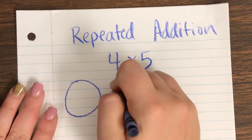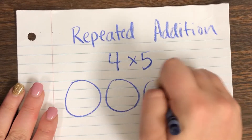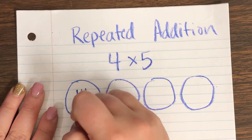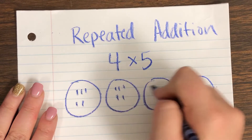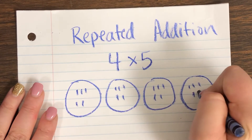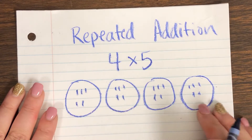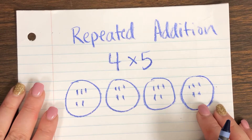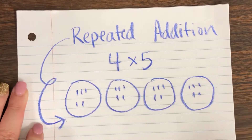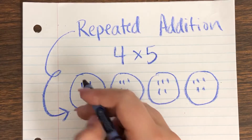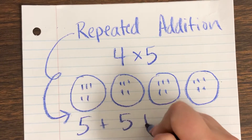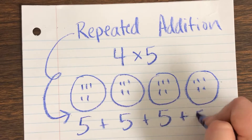I'm going to draw four groups and put five in each group — one, two, three, four, five in each of the four groups. Now that I have my groups, the repeated addition is super easy because you just add the groups together. There's five in this group plus five in this group, because there's five in every group.